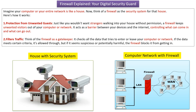The second point is filters traffic. Think of a firewall as a gatekeeper. Firewall checks all the data that tries to enter or leave your computer or computer network. If the data meets certain criteria, it is allowed through. But if the data seems suspicious or potentially harmful, then firewall blocks it from getting in.